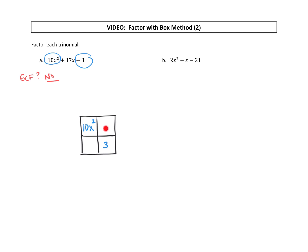And then we have to find the two terms, two factors that we're going to put into those boxes. So what we do is we take our a value times our c value. We're going to do 10 times 3, and that gives us 30.